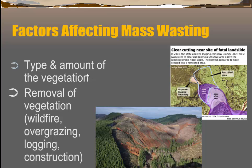The type and amount of vegetation on a slope is another important factor. Removing vegetation — naturally through wildfire, or through overgrazing, agriculture, logging, or construction — increases the chances of mass wasting. Here's an example of a mountain slope that's been clear-cut: you can see the amount of mass wasting in the clear-cut area where trees have been removed compared to areas where vegetation remains.